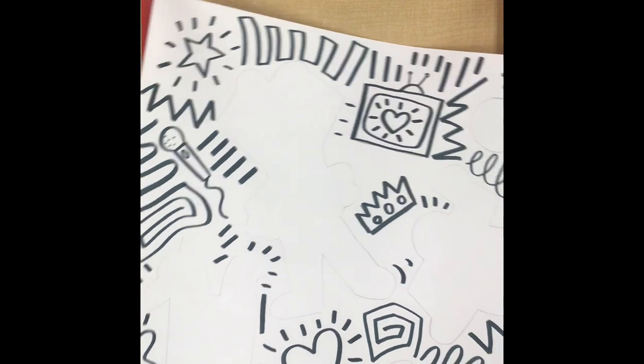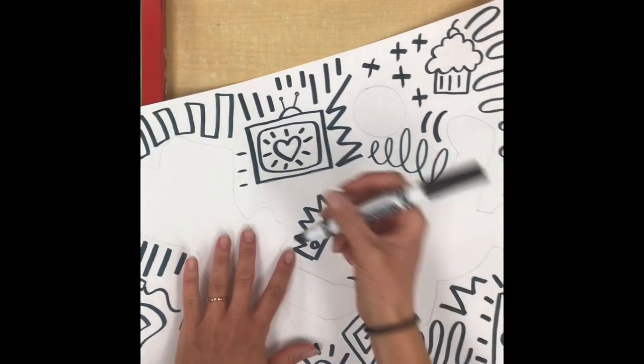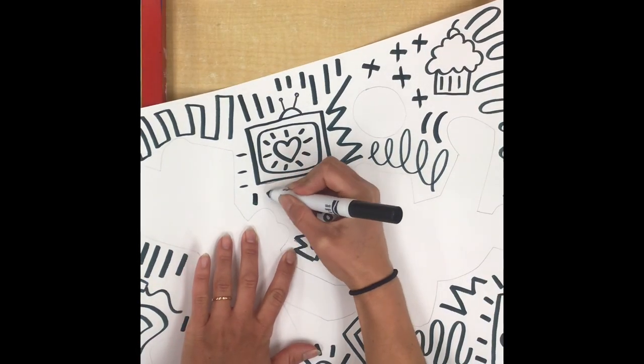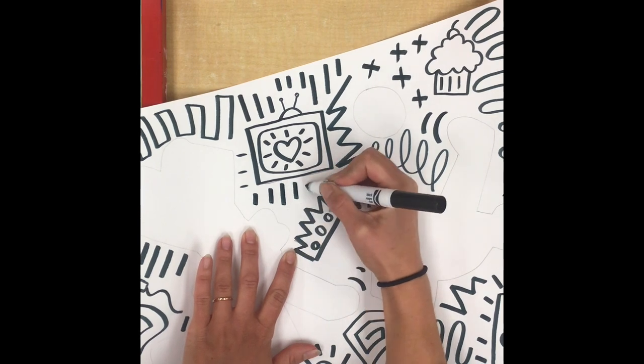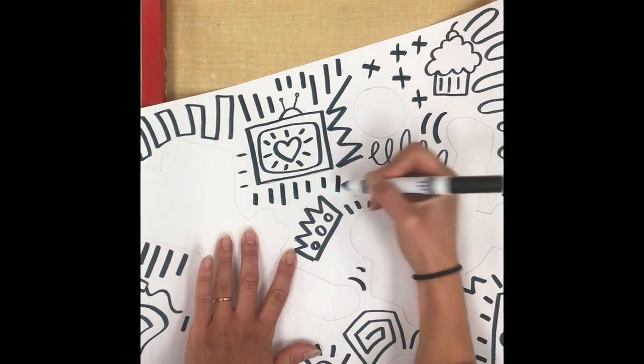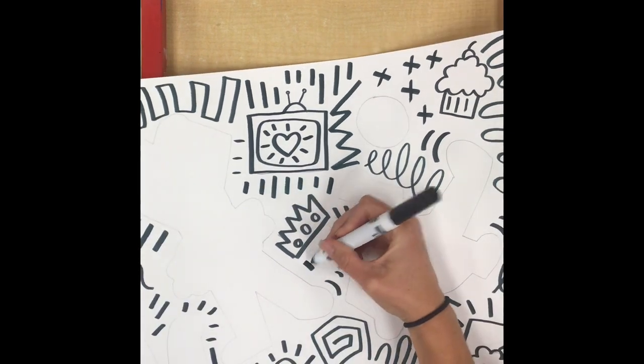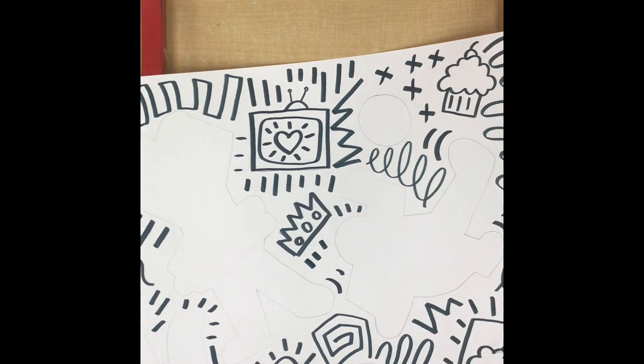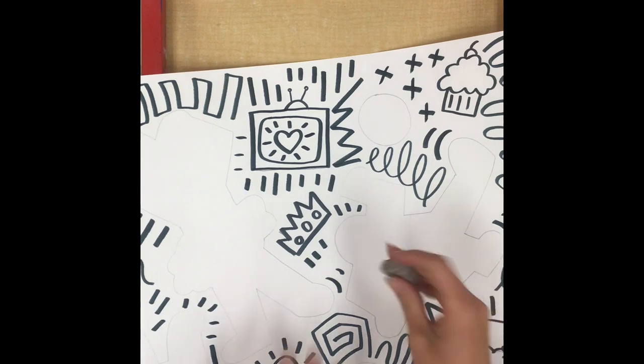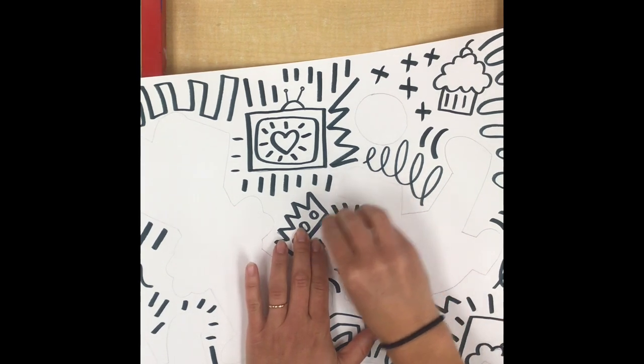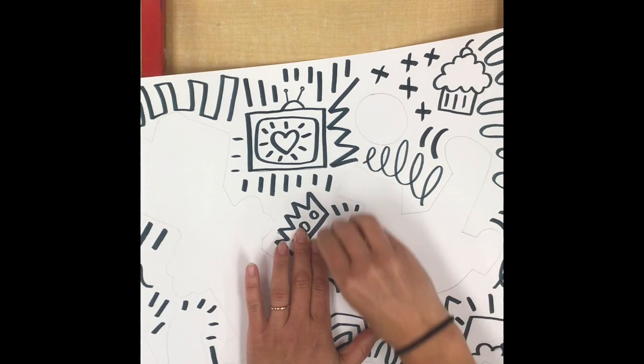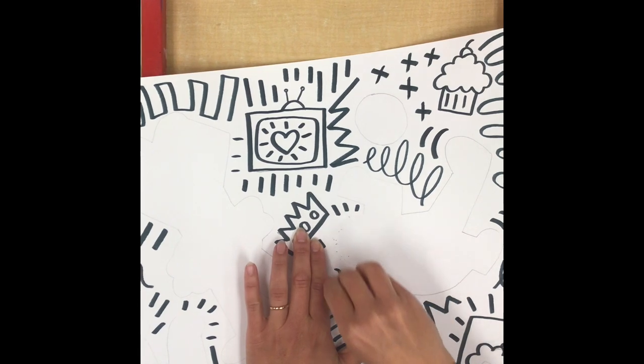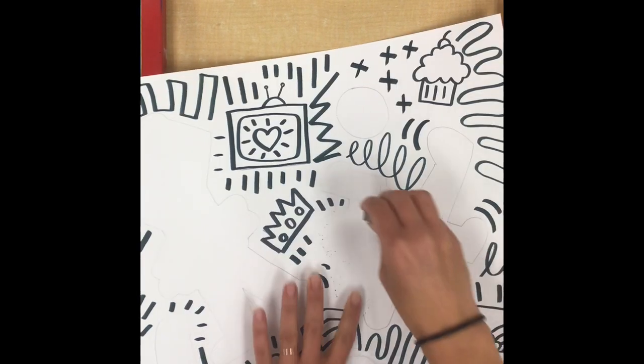I'm going to double-check my paper and make sure there's no spaces that need just a little bit of filling in. You can always use some of Keith Haring's famous little short lines in any little medium-sized areas. Then the last step is to very carefully erase any pencil lines that are left over, but make sure that your marker is dry before you do that so that you don't smudge any of the black lines.